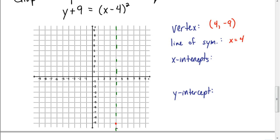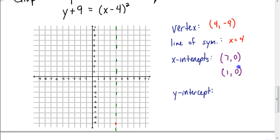Next, the x-intercepts. You should have gotten the coordinates (7, 0) and (1, 0). Graphing those — 7, 0 and 1, 0. Another way to check: they should be symmetrical about the line of symmetry. Indeed, (7, 0) is 3 units to the right of x equals 4, and (1, 0) is 3 units to the left of x equals 4. So far, so good.